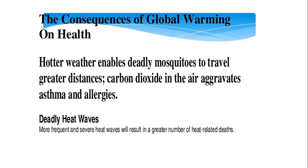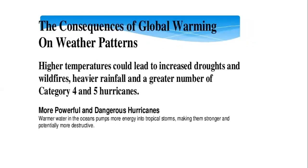Global warming effects on health: hotter weather enables deadly mosquitoes to travel greater distances, and carbon dioxide in the air aggravates asthma and allergies. Effects on weather patterns: higher temperatures could lead to increased droughts, wildfires, heavier rainfall, and a greater number of category 4 to 5 strong hurricanes.